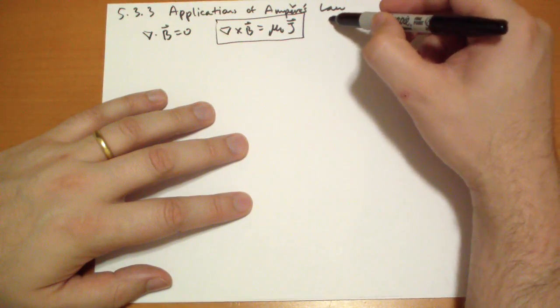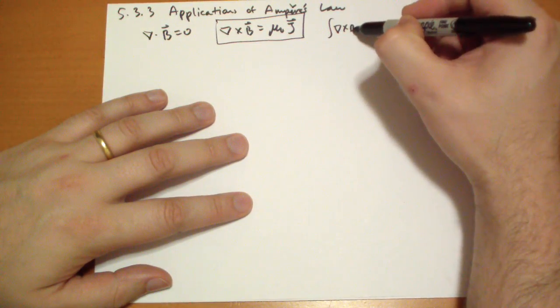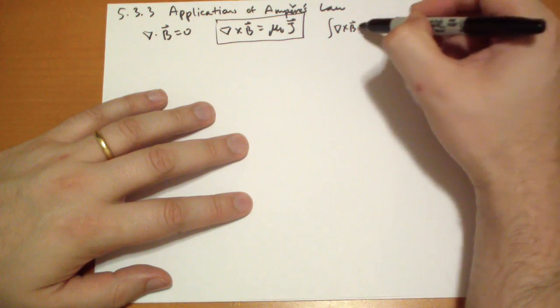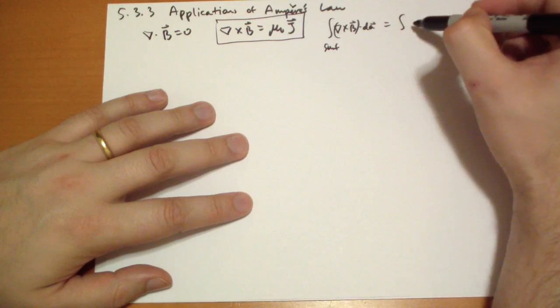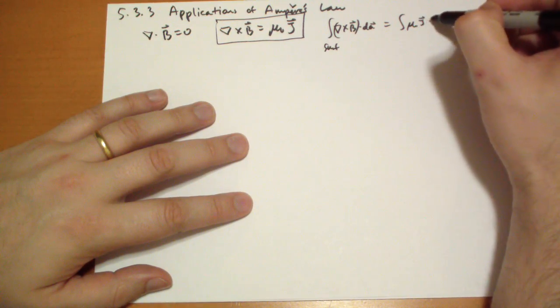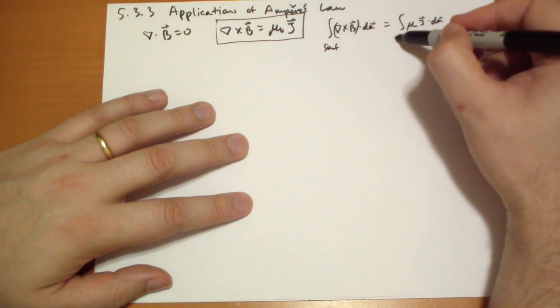And so if we take the integral of curl B dot dA vector, right, over some surface, well that's going to be the same as the integral of mu-naught J vector dot dA vector, on the same surface.